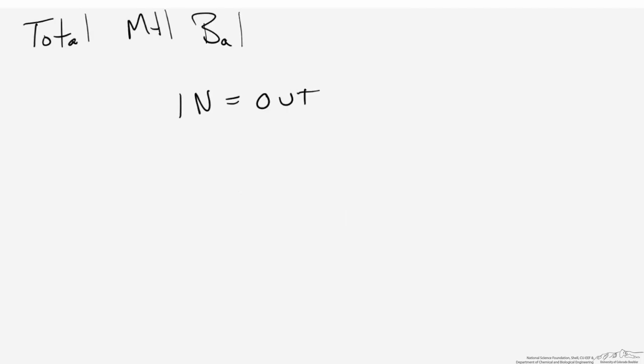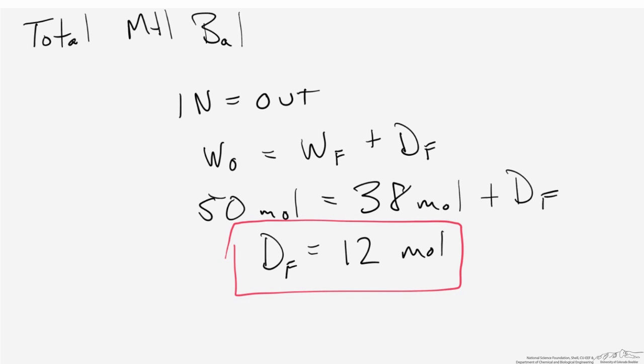To determine the total number of moles of distillate that have been generated, we simply do a material balance on the whole process, where we take the number of moles that entered the system in the pot still — the initial amount added at the beginning — and that equals what ended up in the still at the end of the distillation operation plus what exited in the form of distillate. Substituting in the known values, we can determine that 12 moles left the system in the form of distillate.